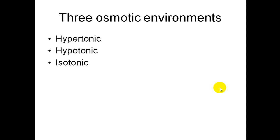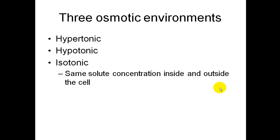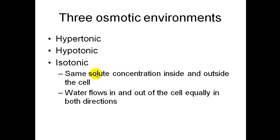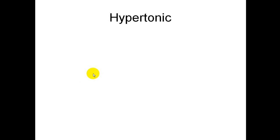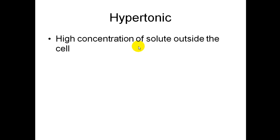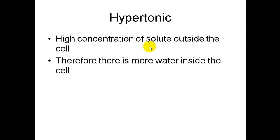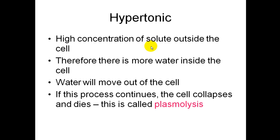Next, osmotic environments: hypertonic, hypotonic, and isotonic. Isotonic is the easiest — this is when you have the same solute concentration inside and outside the cell. Water will still flow in and out equally in both directions. Most cells in our body are isotonic. Hypertonic is defined as having a high concentration of solute outside the cell — the cell is in a lot of salt water or a very sugary substance. Because there's high solute outside, there is comparatively more water inside the cell, so water moves out. If this continues, the cell will collapse and die, which is called plasmolysis.